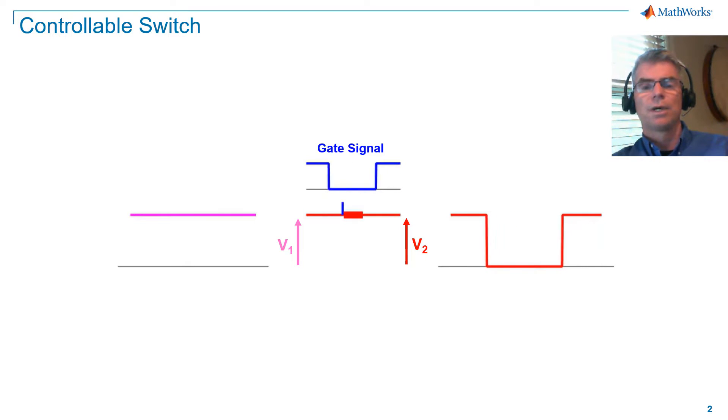An inverter requires a controllable switch, that is, a switch which we can turn on and off with a control signal. Note that control signals are also referred to as gate signals. Here we have an ideal controllable switch, which connects an ideal DC source with voltage V1 to a resistive load with voltage V2. The switch will conduct when it's turned on, and will stop conducting when it's turned off.